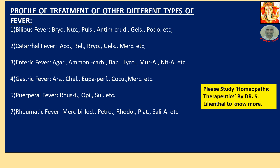5. Puerperal Fever. Remedies: Stramonium, Opium, Sulfur. 6. Rheumatic Fever. Remedies: Macrotinum, Petroleum, Rhododendron, Platinum, Salicylic Acid.